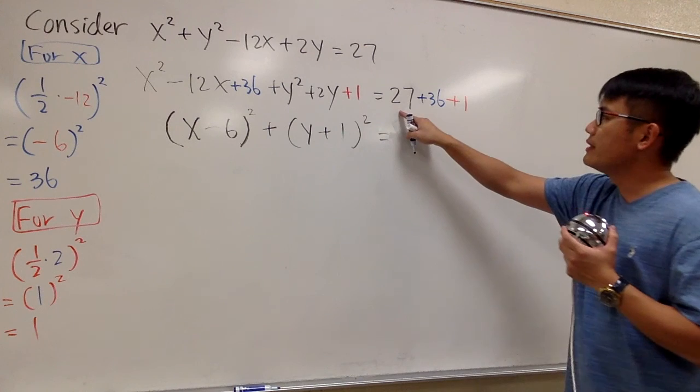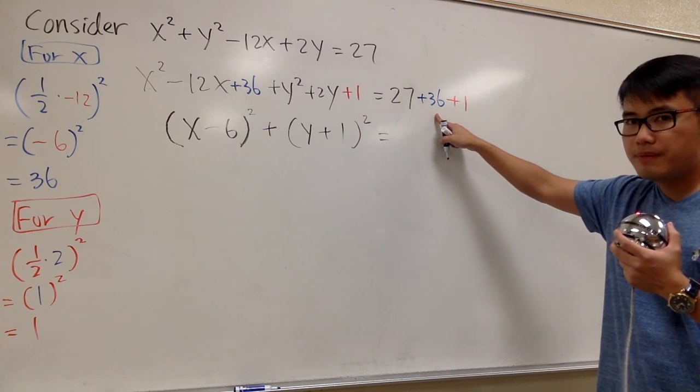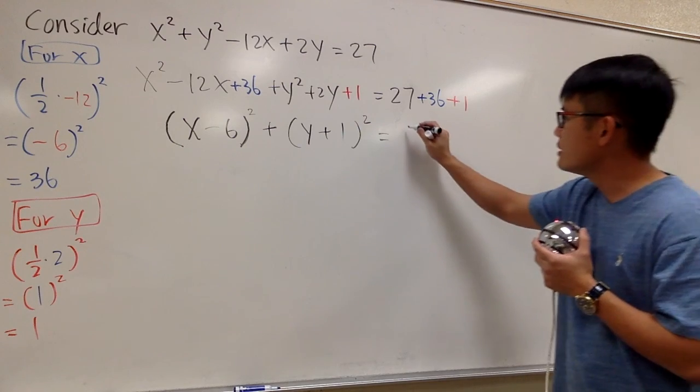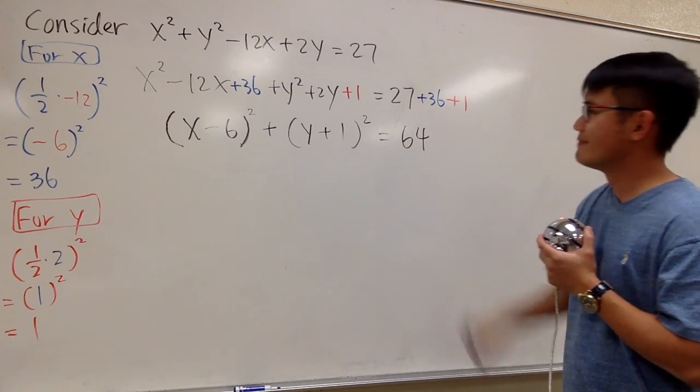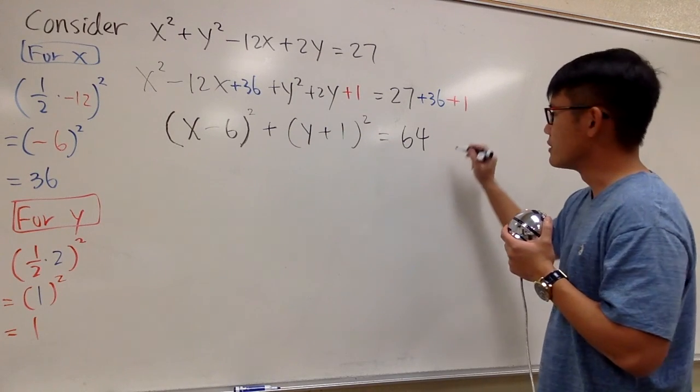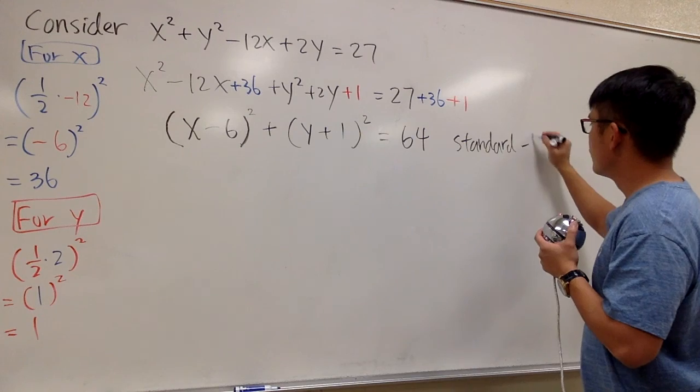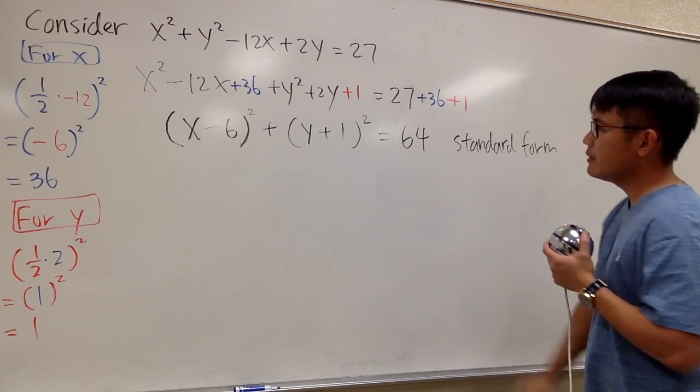And then at the end here, 27 plus 36 is 63, and then plus 1 is 64. So now this right here is the standard form of the circle. So let me just label it. This is the standard form, which we got it already.